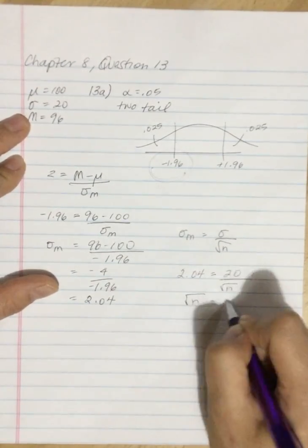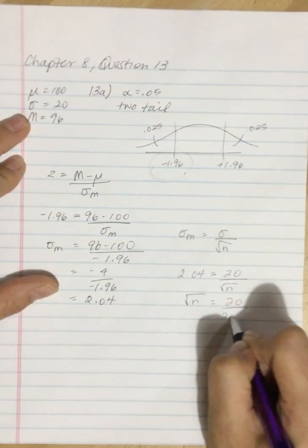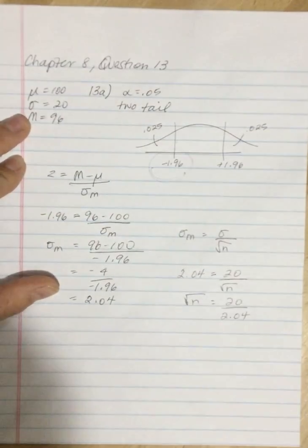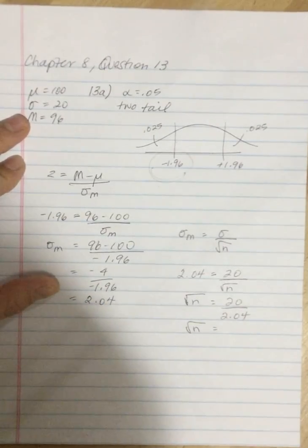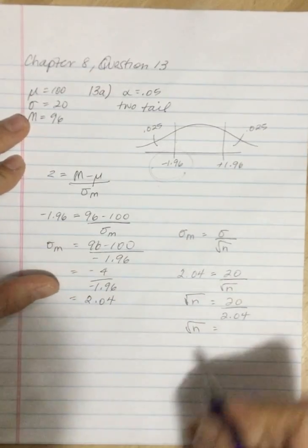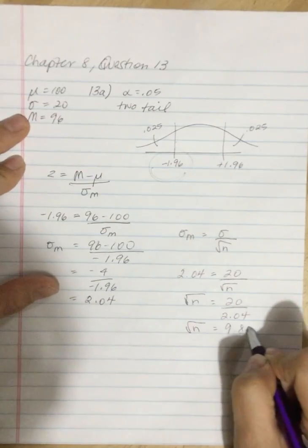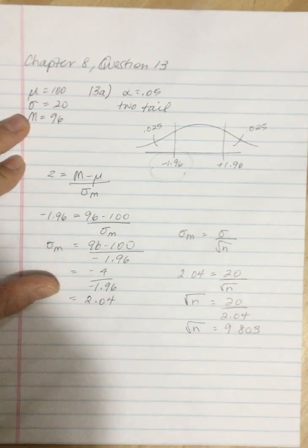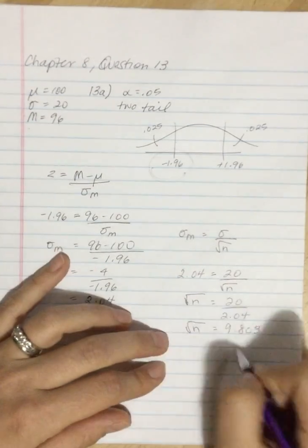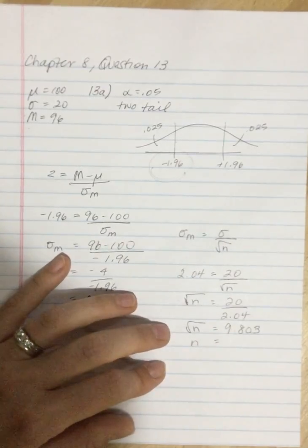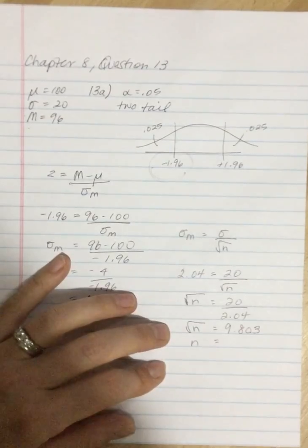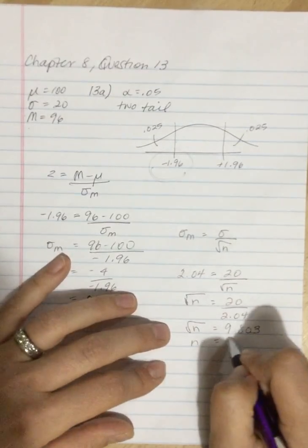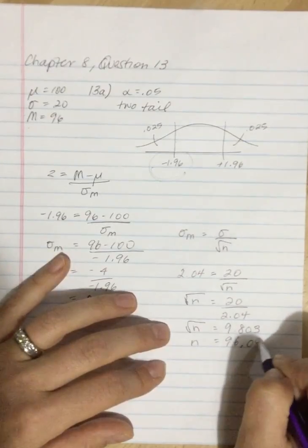So the square root of n is equal to 20 divided by 2.04. If we calculate, square root of n equals 9.803, and squaring that we get 96.098.